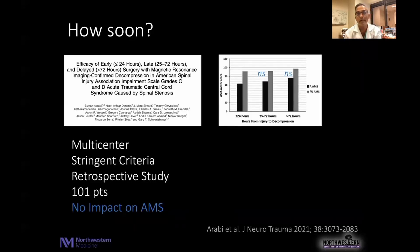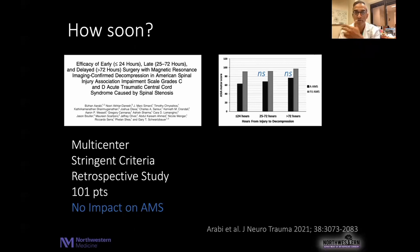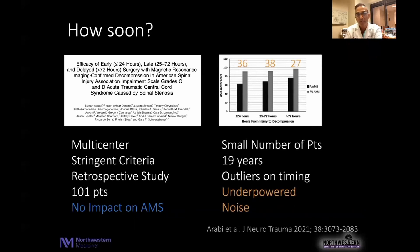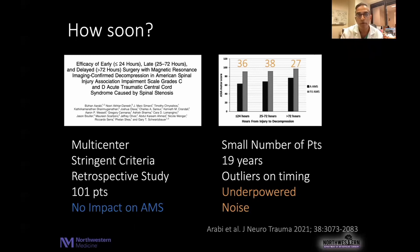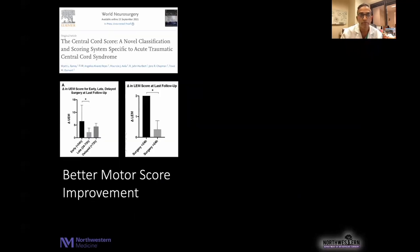This leads to the conversation of how soon should we think about surgical management. One study of 101 patients suggested that in the setting of acute cord injury by central cord syndrome, there was no impact on ASIA motor scores whether surgery was performed at under 24 hours, 25 to 72 hours, or beyond 72 hours. But if we dig a bit deeper into the data, it's a small number of patients — 36, 38, and 27 patients treated over 19 years — with lots of variance in treatment and high outliers on timing. It's really an underpowered study with quite a bit of noise to say that time does not matter when it comes to surgical management.